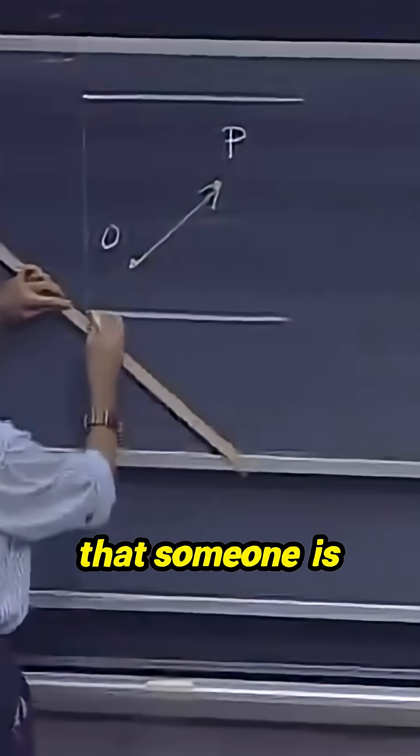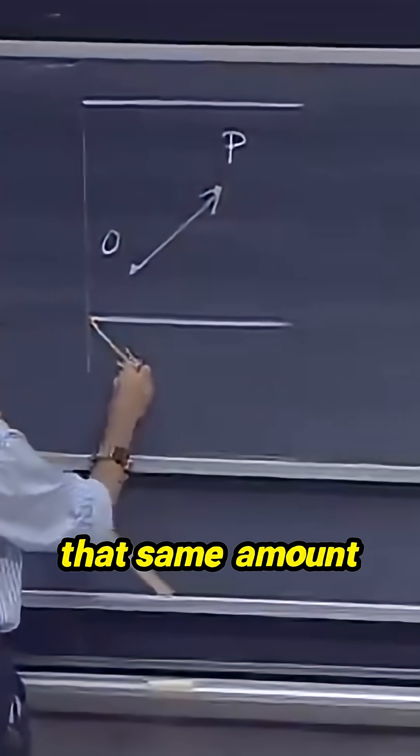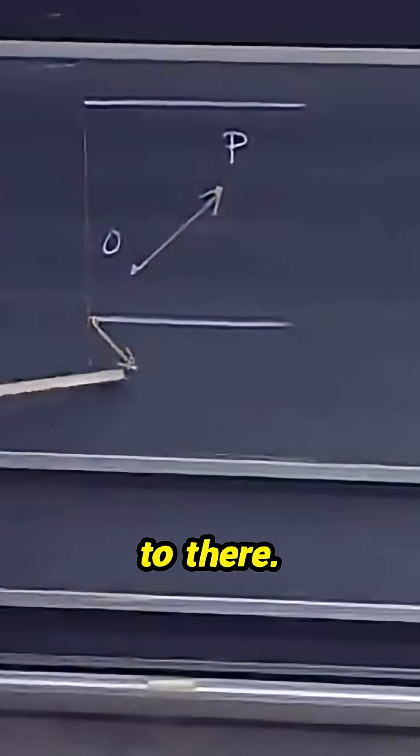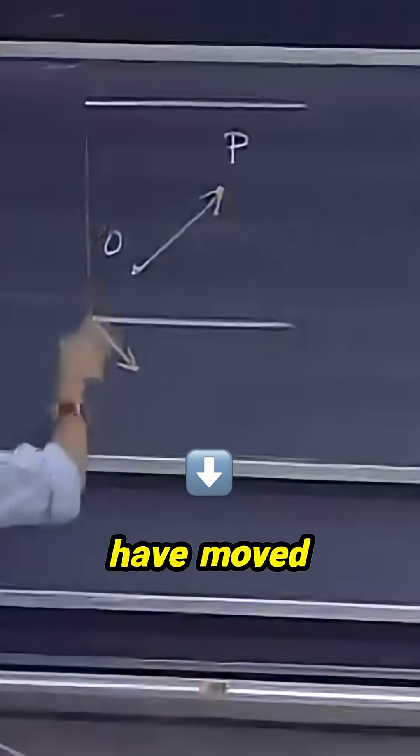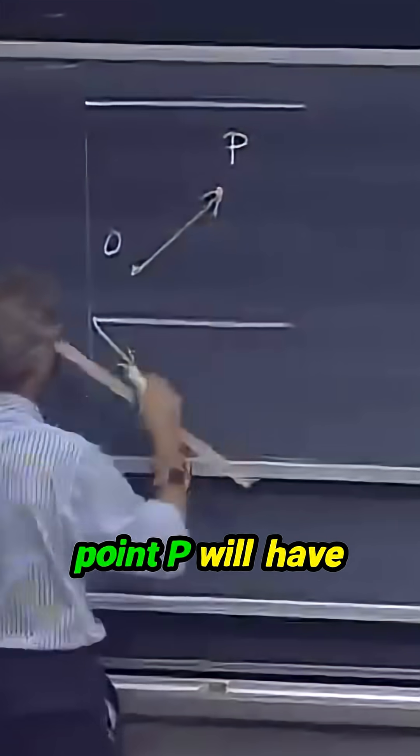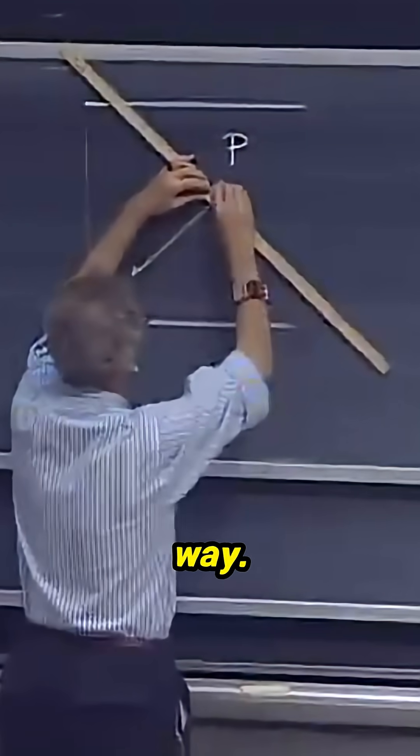It just so happens that someone is also going to move the table in that same amount of time from here to there. So that means the table will have moved down, and so my point P will have moved down exactly the same way.